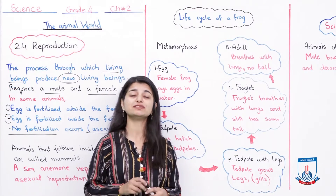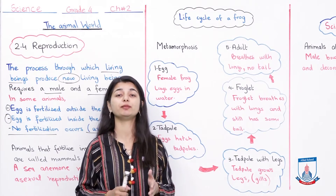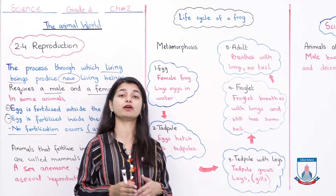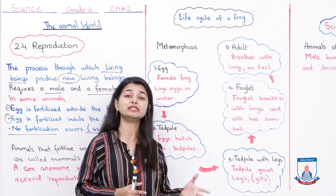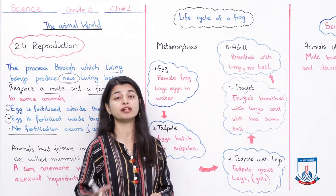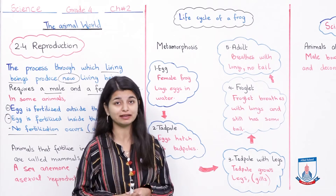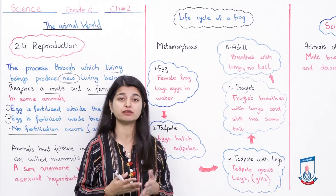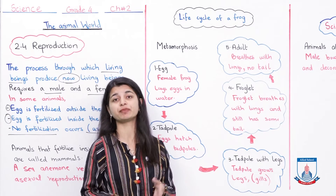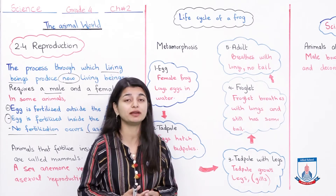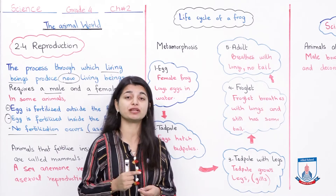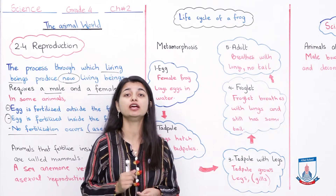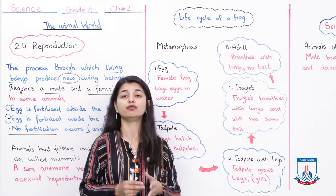As we have talked about reproduction involving animals, we need a male species and a female species that interact with each other, and then a new offspring is born. To make these examples clearer, we will study a small life cycle — the frog life cycle. Frogs, or mendoc, you will see everywhere — on the lawn, outside your house.